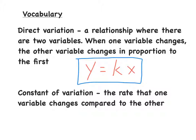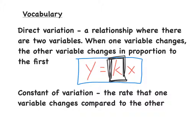The constant of variation is the rate that one variable changes compared to the other. The constant of variation is k. k is basically like a slope — if y changes, then x is going to change as much as k does.